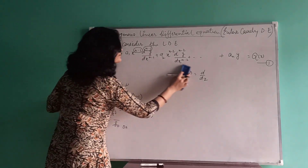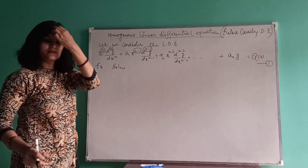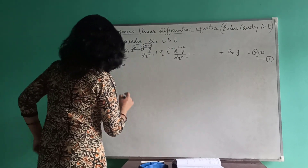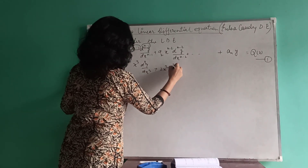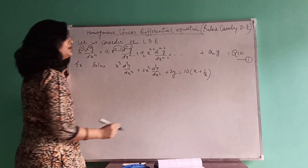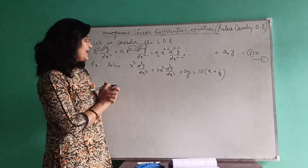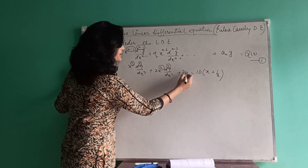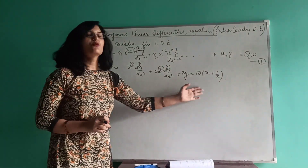Let us consider one example. We have to solve: x cubed times d³y/dx³ plus the next terms. We have to find both CF and PI. First, observe whether it is homogeneous or not. Here the order is 3 and the power is 3; order is 2 and power is 2; and for the y term there is no derivative and no x power, so x to the power 0, which is 1. So this is a homogeneous differential equation.